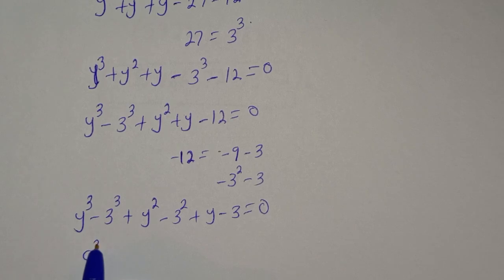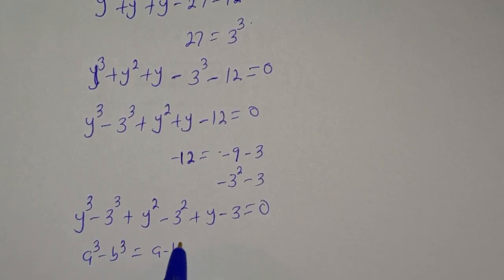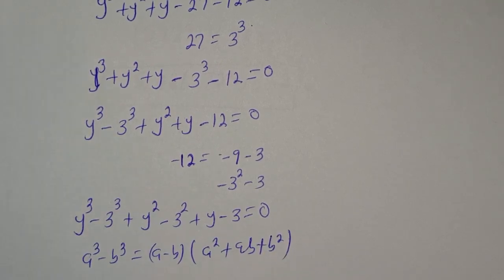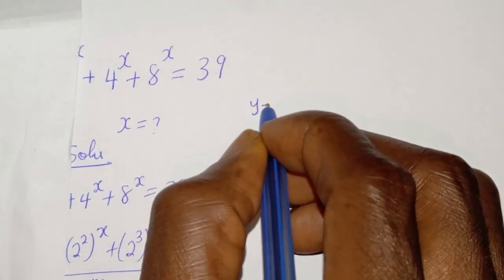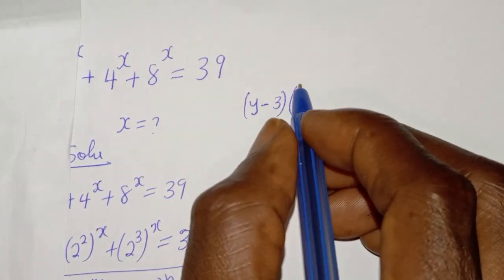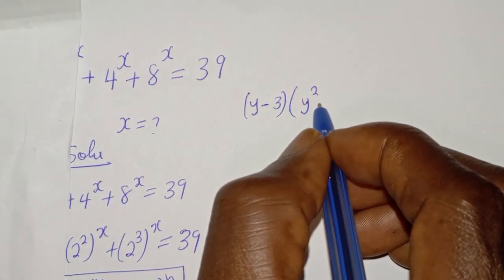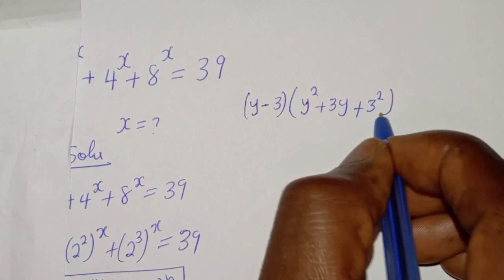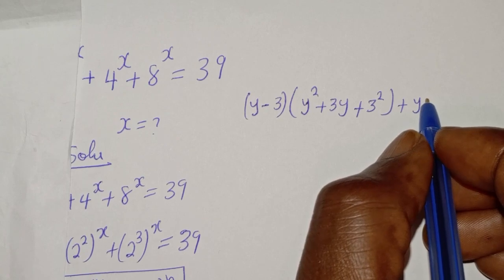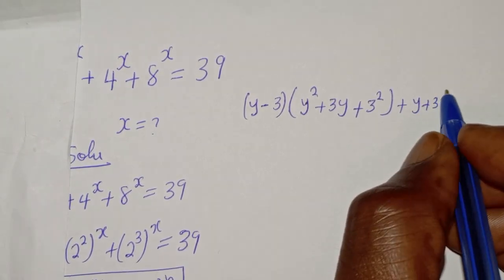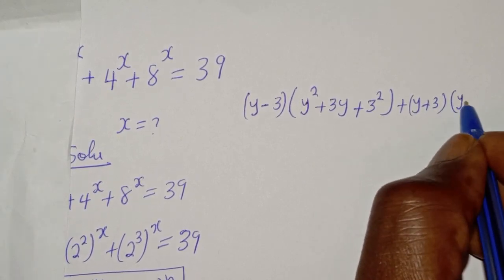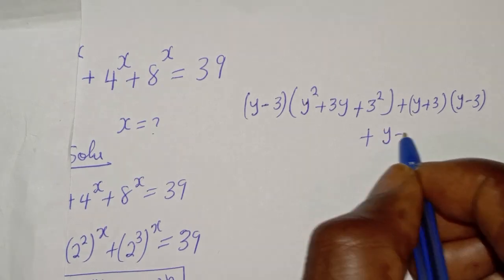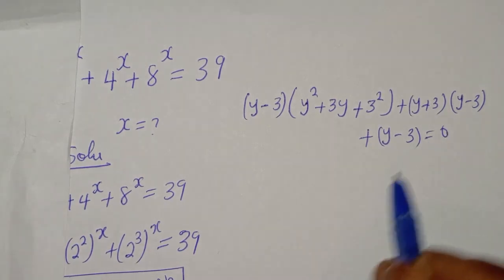Using the difference of cubes formula: a raised to power 3 minus b raised to power 3 equals (a minus b)(a squared plus ab plus b squared), we factor y raised to power 3 minus 3 raised to power 3. We can see that y minus 3 is a common factor throughout all three grouped terms.